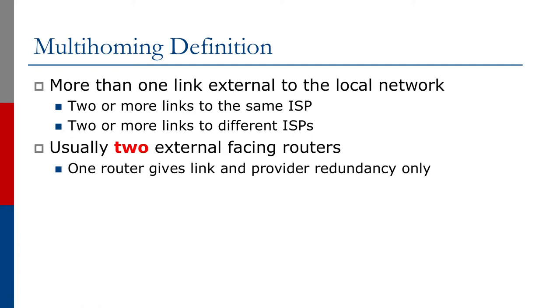We're usually using two external facing routers — back to the two of everything. We can multi-home with one router, and that gives us link and provider redundancy, but remember we're now back to being entirely dependent on that single router: the software, the hardware, and the configuration on it.